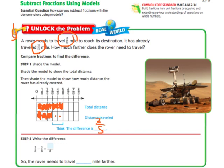So two-eighths miles is the difference. That's how much further it needs to go. So five-eighths minus three-eighths is two-eighths. So the rover needs to travel two-eighths miles further.